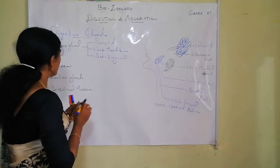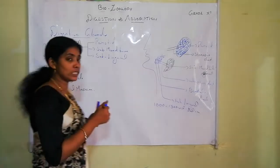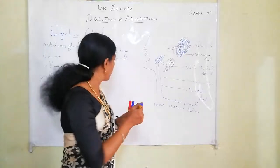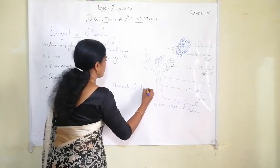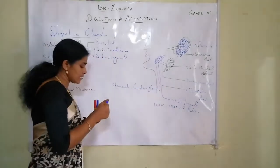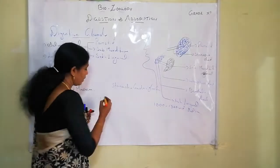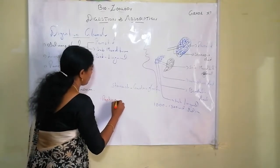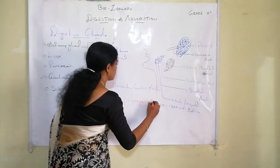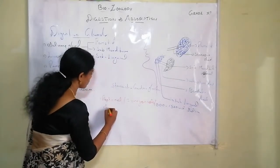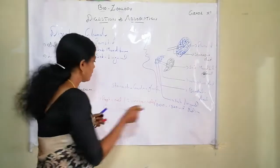Next is the gastric gland. The gastric gland is present in the wall of the stomach. The gastric gland consists of three types of cells. The first is peptic cells, also known as zymogen cells or chief cells, which secrete gastric juice.